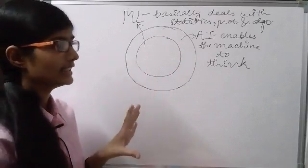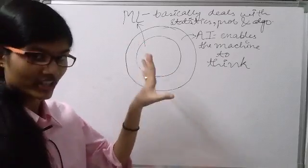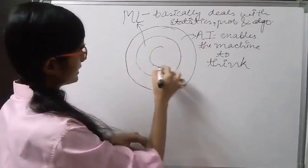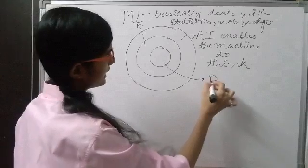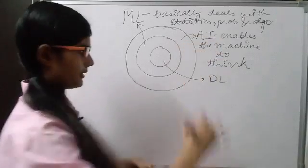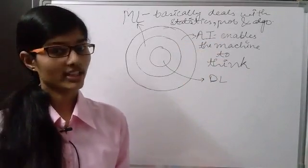Okay. Now, what is deep learning and where is deep learning here in Venn diagram? So, deep learning is basically the subset of machine learning. So, let's make a circle here and give it a name as deep learning.